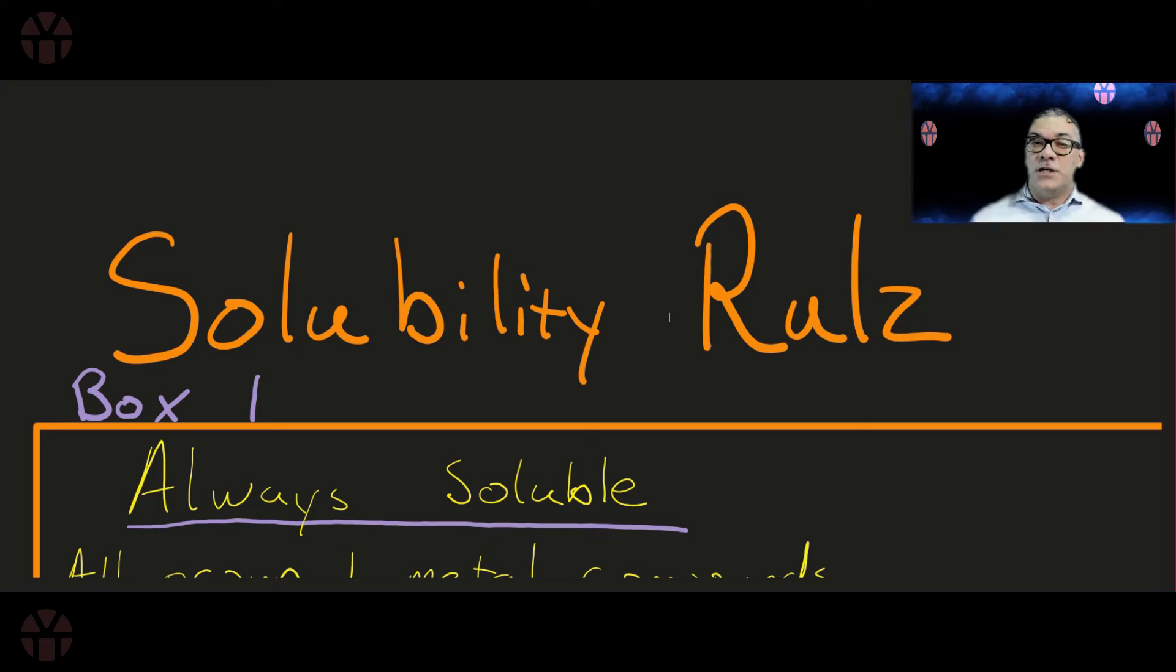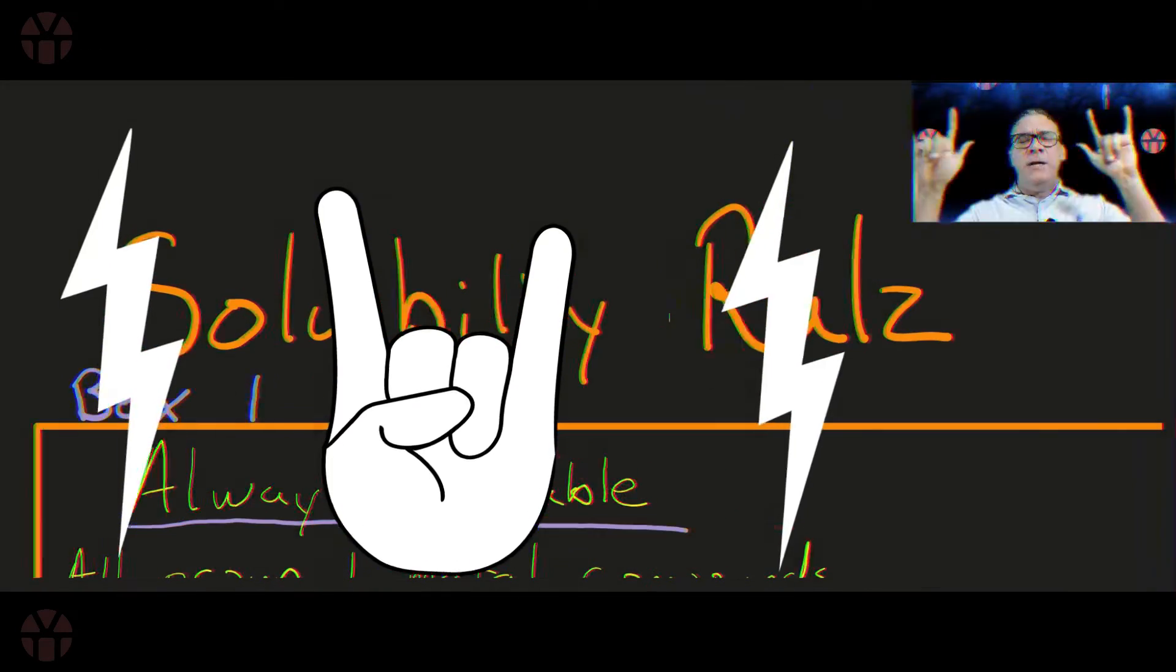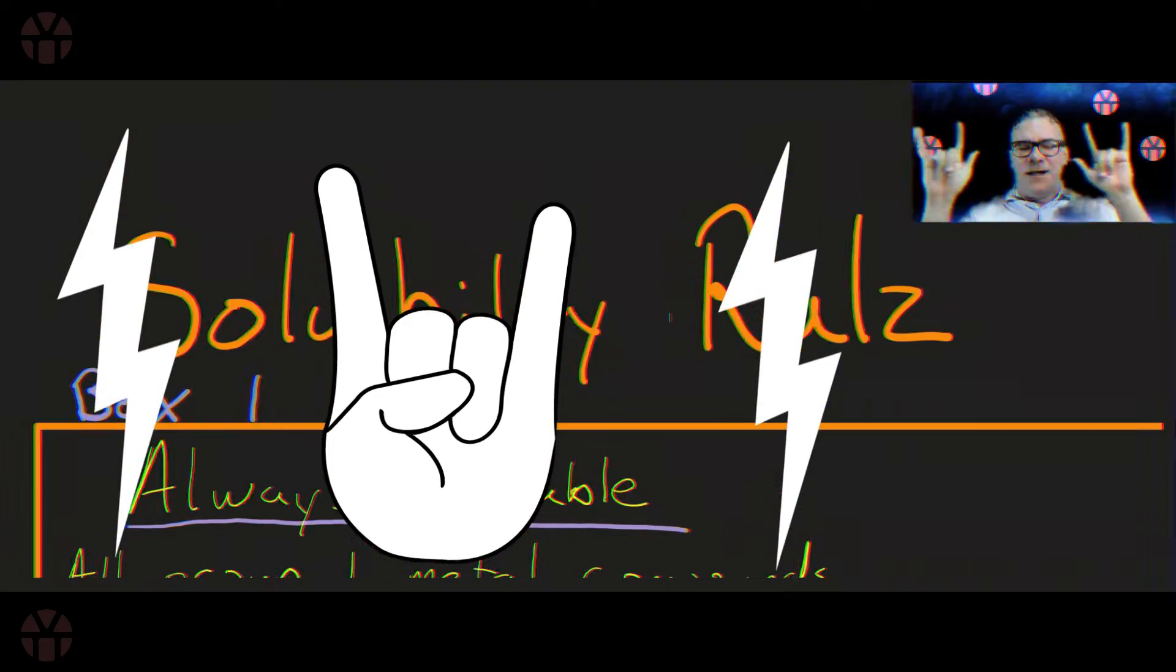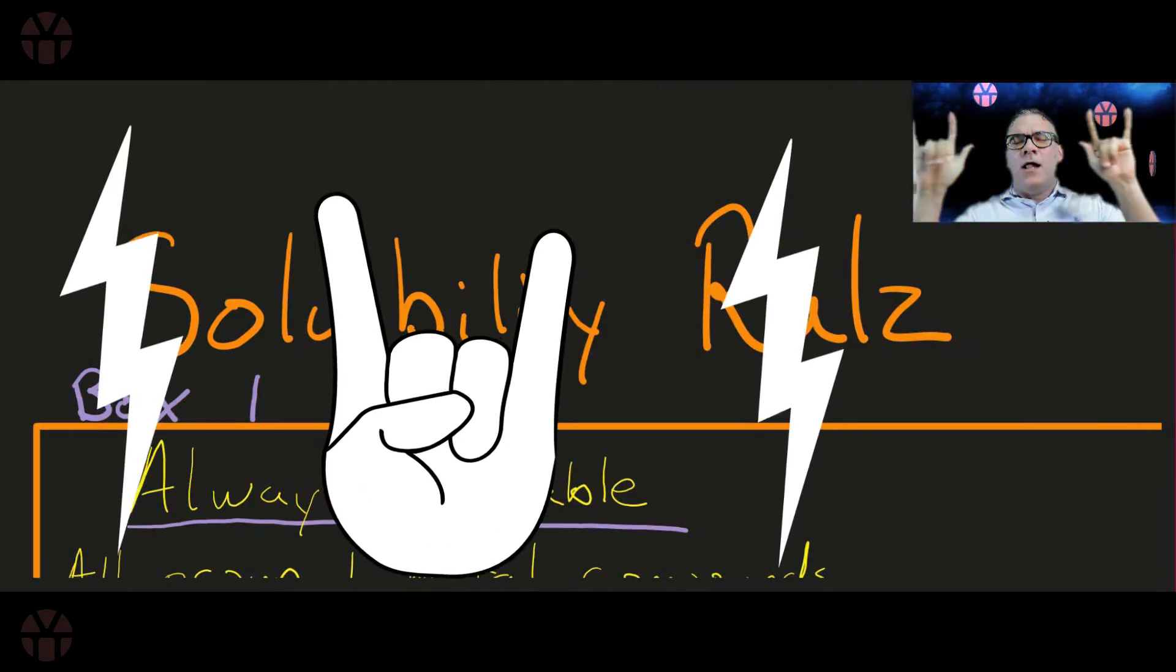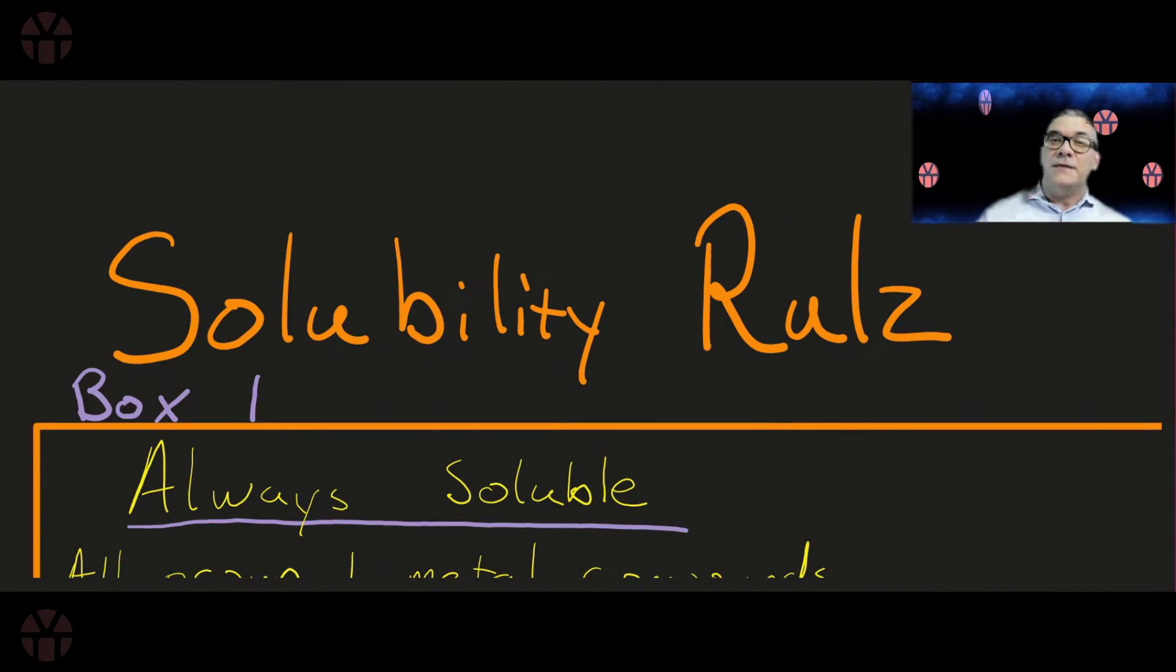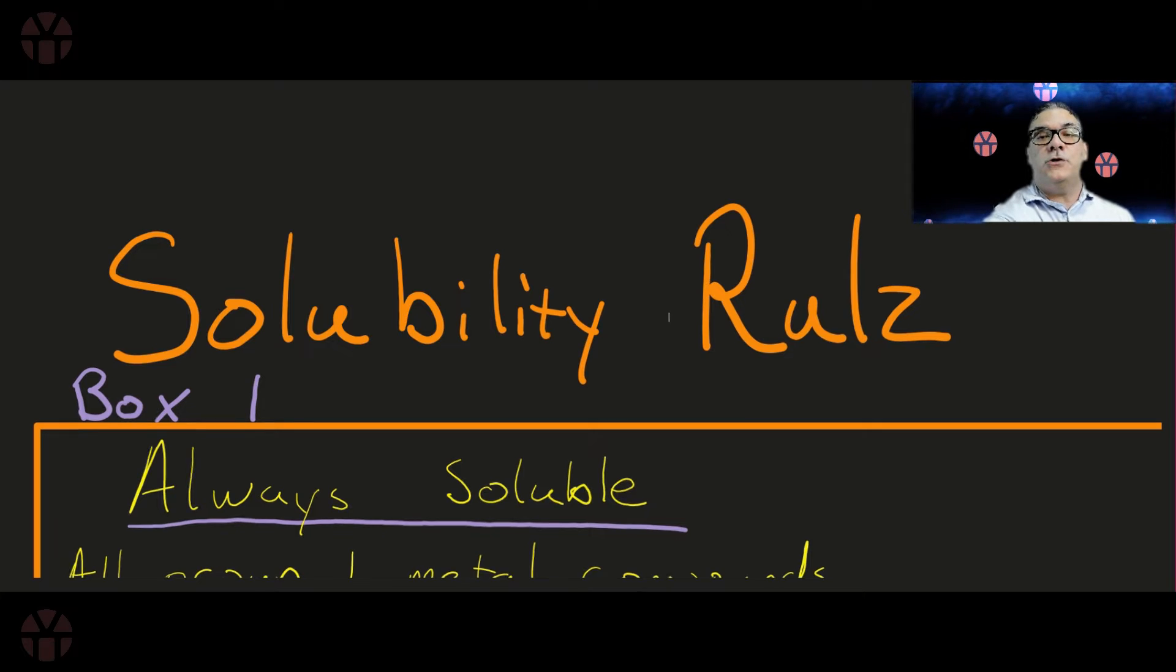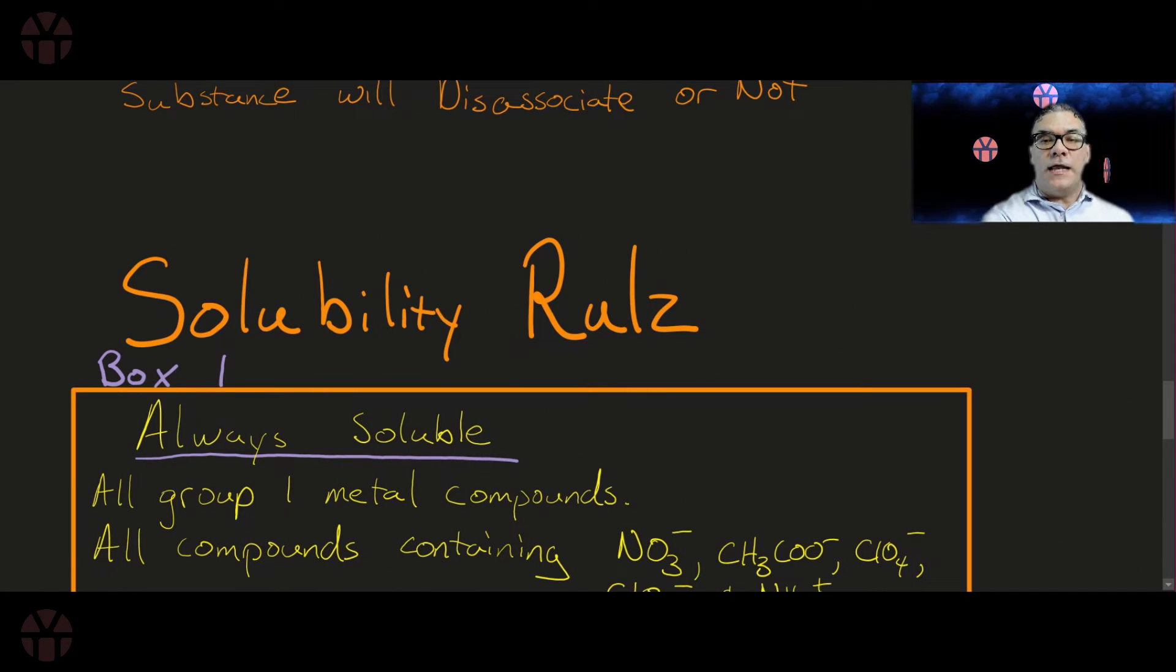Well, just like we had our nomenclature rules, we now have solubility rules. And what that means is that you're once again going to have to memorize certain key substances and certain key ions that when you see them you are automatically going to know this dissociates in water.